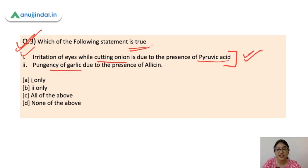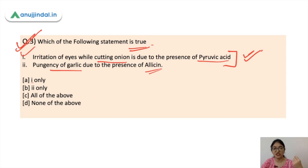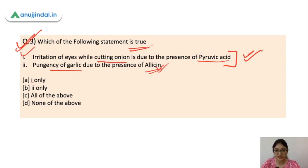The second statement is: the pungency of garlic is due to the presence of allicin. So if you eat garlic, there is a burning sensation in your tongue and a very pungent taste and odor. This is due to the chemical allicin. Both of these statements are correct, and the correct option would be C.